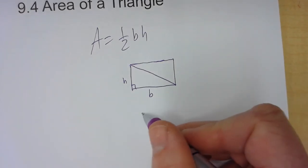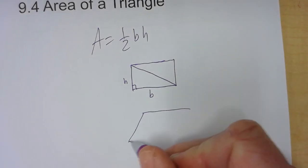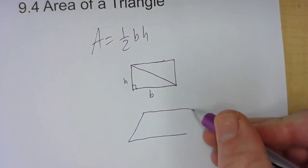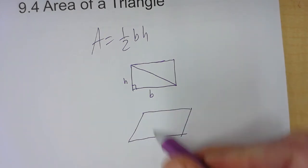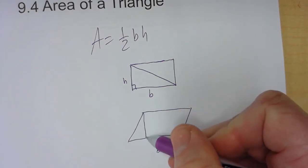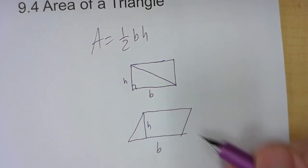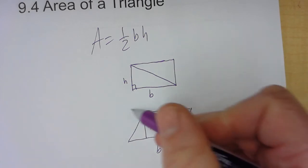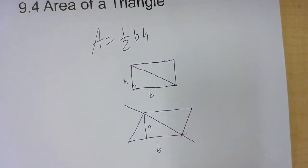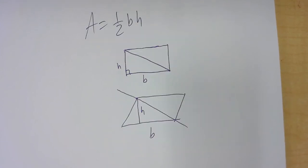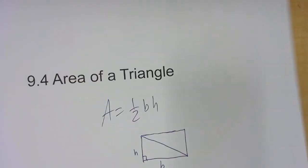A parallelogram is just base times height. And then for half base times height, that would be the area of the triangle. So that's what's going on — that's just from geometry. But now we're in trigonometry.